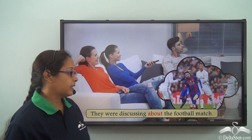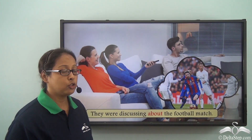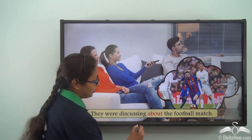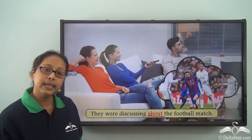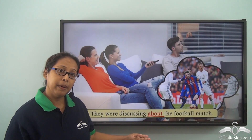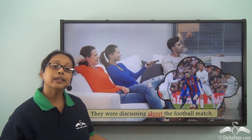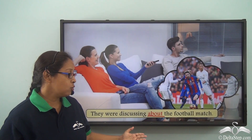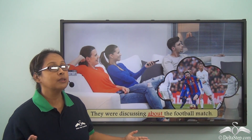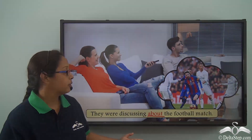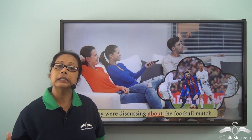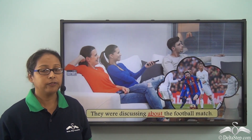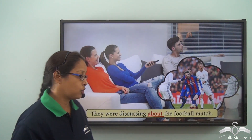They were discussing about the football match. The preposition here is 'about.' Here we are not talking about movement. When we use 'about' in this way, it means they are talking on the subject of something. In this case, what is the subject? They are talking about the football match.